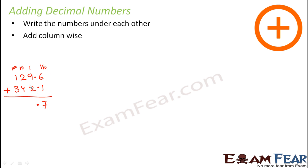6 plus 1 is 7, put the decimal point. 9 plus 2 is 11, so you write 1 and carry 1. 4 plus 2 is 6, plus you were carrying 1, so that is 7. Then you have 3 plus 1 which is 4, so the result would be 471.7. Please do not forget to put the decimal point, because if you forget it becomes 4717, which is a different number altogether.